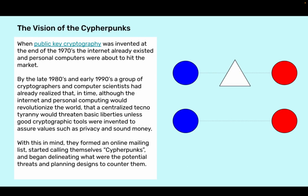By the late 1980s and early 1990s, a group of cryptographers and computer scientists had already realized that, in time, although the internet and personal computing would revolutionize the world, a centralized techno-tyranny would threaten basic liberties unless good cryptographic tools were invented to assure values such as privacy and sound money. With this in mind, they formed an online mailing list, started calling themselves cypherpunks, and began delineating the potential threats and planning designs to counter them.